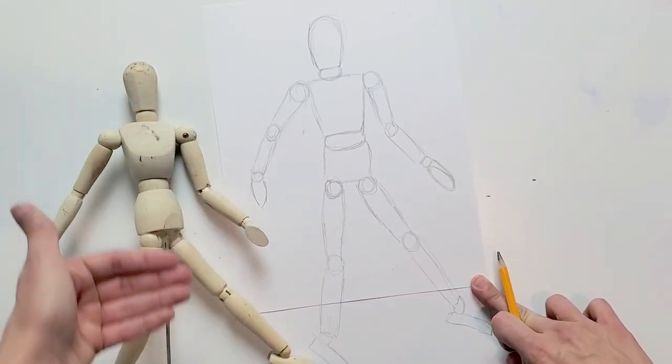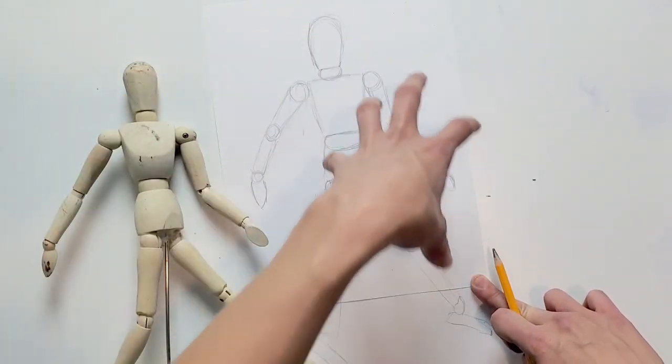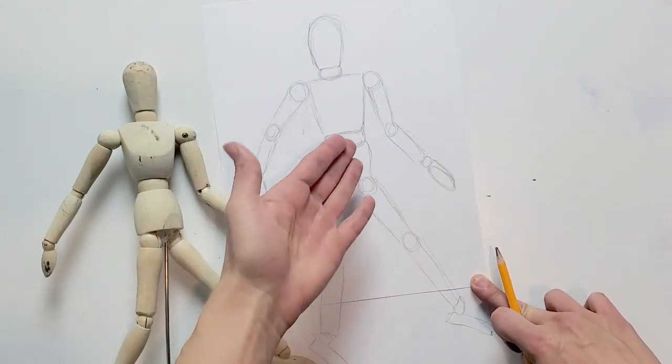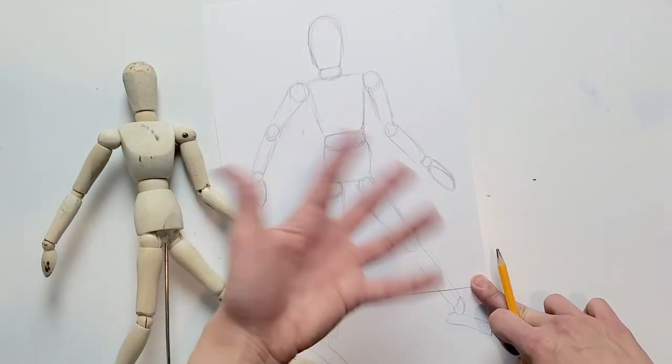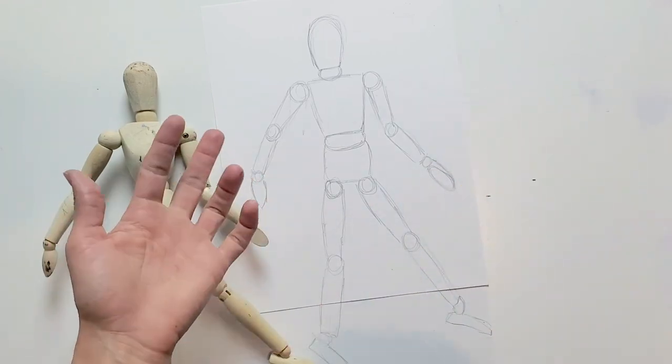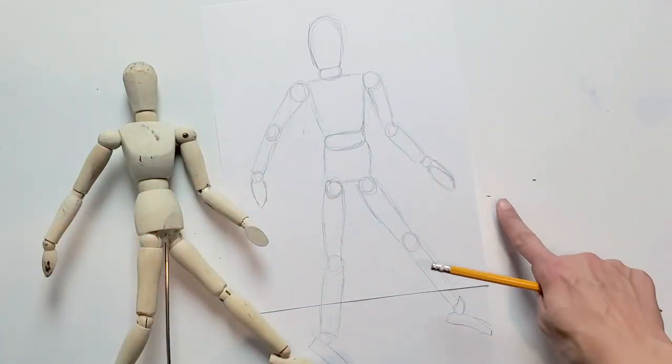Okay, so this mannequin has helped me kind of lay out the general shape of my body. And now from here, I can go in and add uniform details and really make it look like it's a soccer player, or a ballerina, or a gymnast, whatever it is that I'm trying to create.